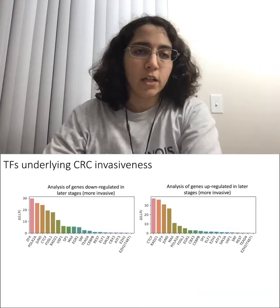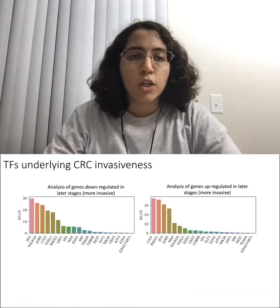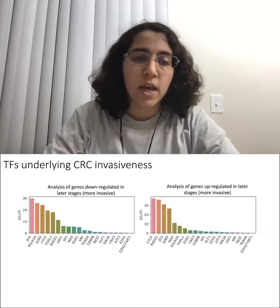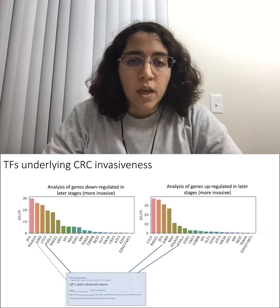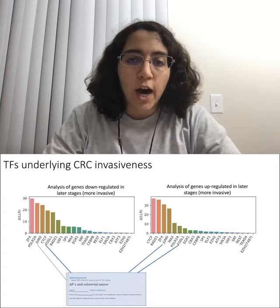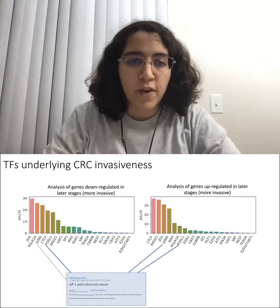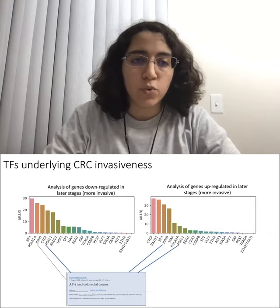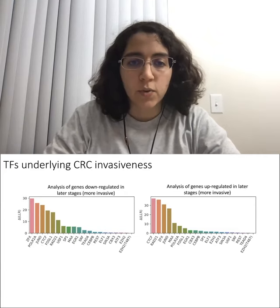Now let's take a look at the results. We performed two separate analyses for up-regulated and down-regulated genes and ranked the TFs for each. For the highly ranked TFs such as JunD and FosL1, we found considerable literature evidence relating them to CRC invasiveness and cancer-related pathways.